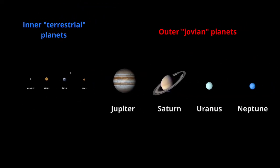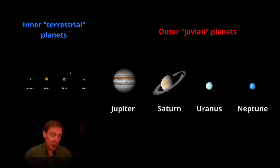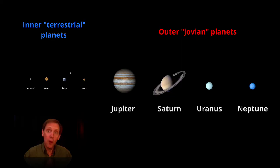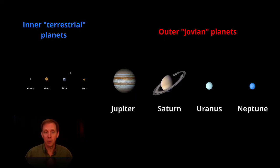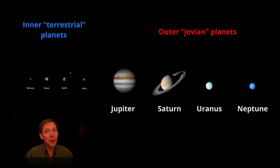Zooming back out, we can see the outer Jovian planets. The term Jovian refers to the planet Jupiter. Coming from America, we would say you were American. Well, if you came from Jupiter, we would say you were Jovian. Hence, when we see the outer planets are all large and gaseous, like Jupiter, we say they are Jovian, or Jupiter-like. The outer Jovian planets are Jupiter, Saturn, Uranus, and Neptune.